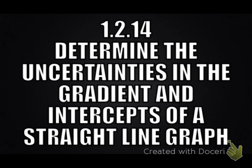Determine the uncertainties in the gradient and intercepts of a straight line graph. So in order to find the uncertainty for the gradient, also known as slope, or intercept, you must find the max and min gradient.